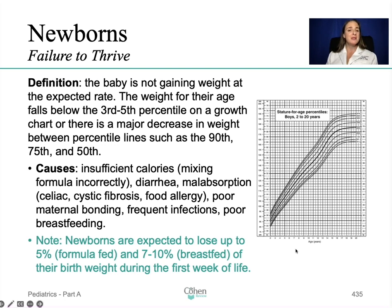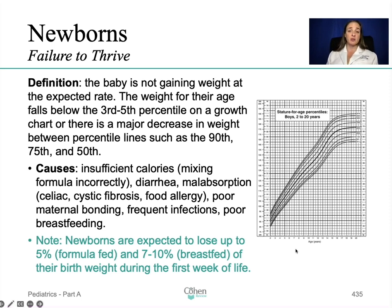By definition, failure to thrive is when the baby is not gaining weight at the expected rate — the weight for their age falls below the third or fifth percentile on a growth chart, or there is a major decrease in weight between percentile lines such as the 90th, 75th, and 50th. Every checkup, the doctor will measure the head circumference, the height, and the weight.